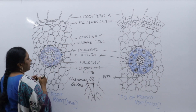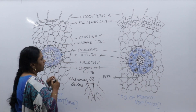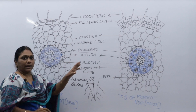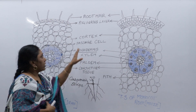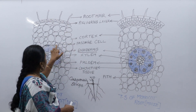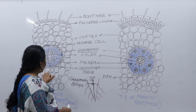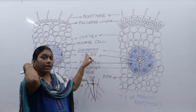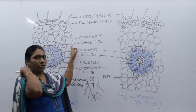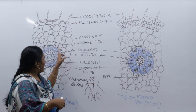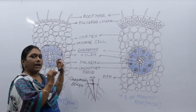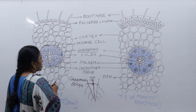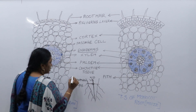The inner layer of the cortex is called as endodermis. The cortex has large cells, and the first inner circle of cells is the endodermis — it is the innermost part of the cortex. Everything inside the endodermis is called as stele.